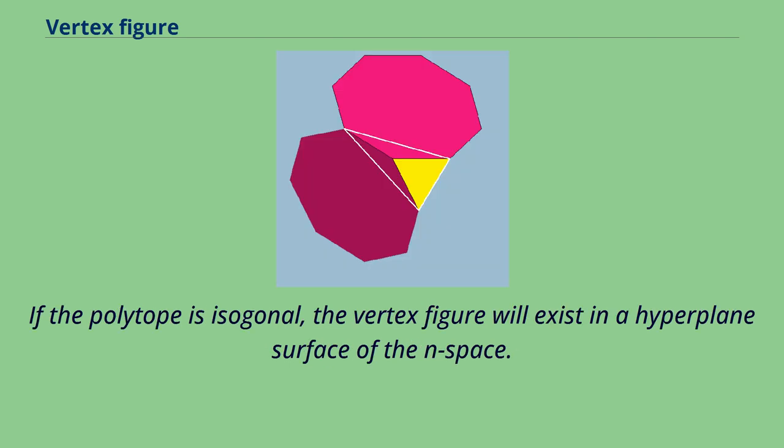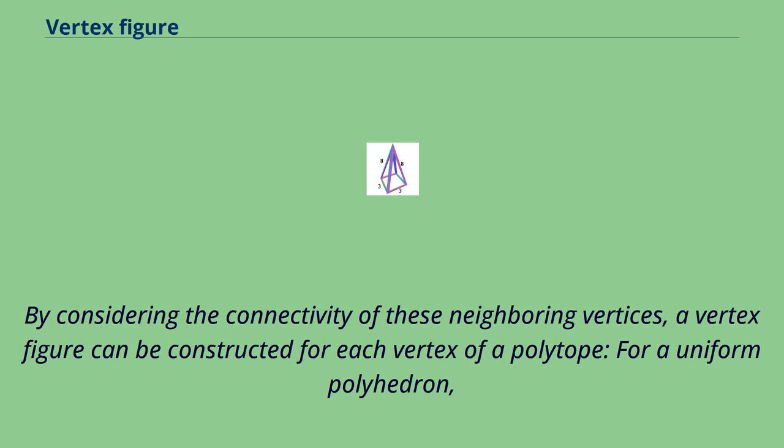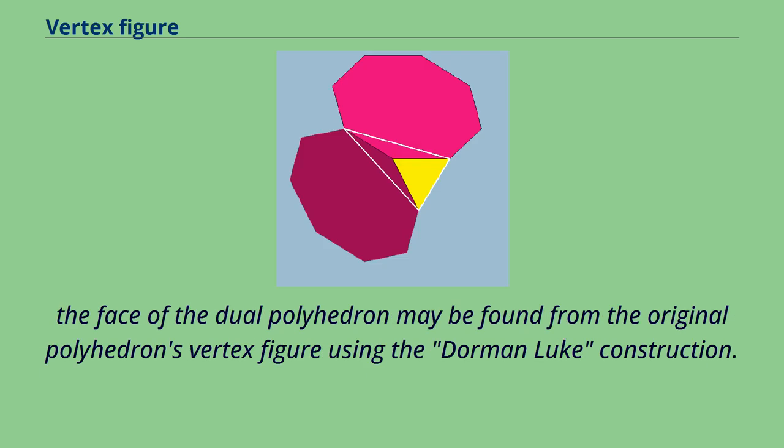If the polytope is isogonal, the vertex figure will exist in a hyperplane surface of the n-space. By considering the connectivity of these neighboring vertices, a vertex figure can be constructed for each vertex of a polytope. For a uniform polyhedron, the face of the dual polyhedron may be found from the original polyhedron's vertex figure using the Dorman-Luke construction.